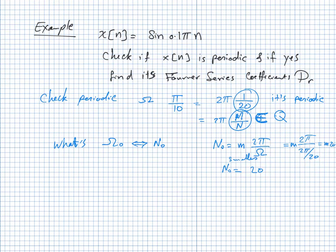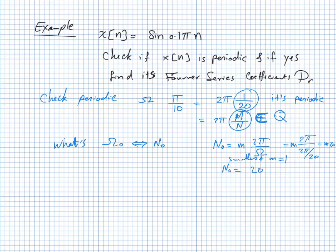N_0 equals 20. This means immediately that ω_0 = 2π/N_0 = 2π/20. Now I know the fundamental frequency and the fundamental period.